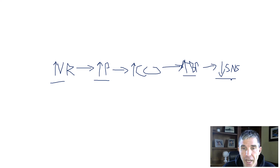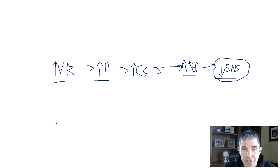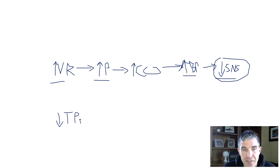The second part of the question asks what happens to total peripheral resistance. With a decrease in sympathetic nervous system activity, we're going to have relative vasodilation of the arterioles. The sympathetic nervous system is going to stop clamping down on those arterioles like it was when the man was volume depleted, and allow them to relax. We get peripheral vasodilation, and that represents a fall in total peripheral resistance. So what happens to TPR after we give a liter of saline? It goes down.